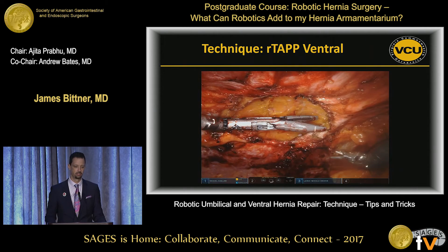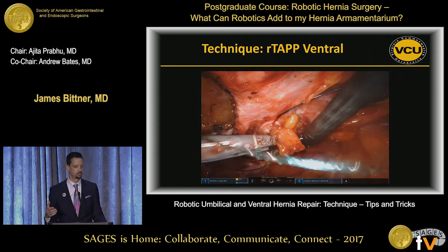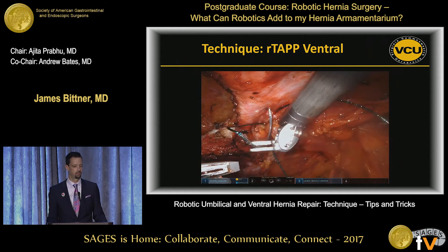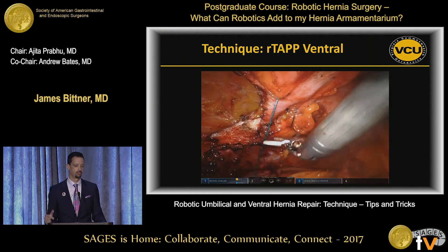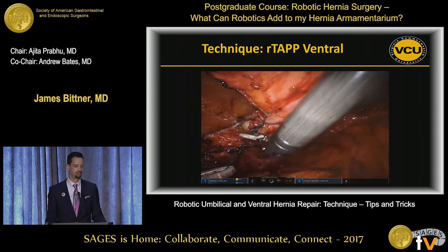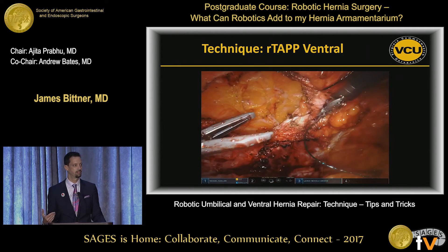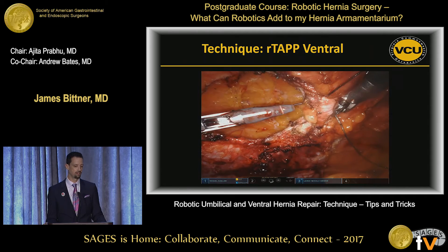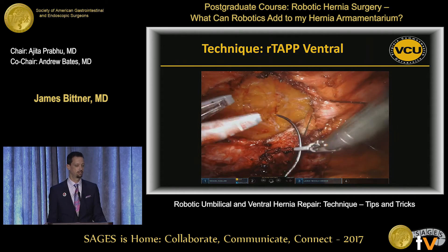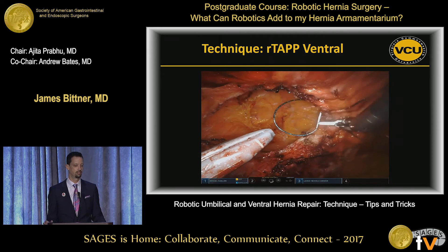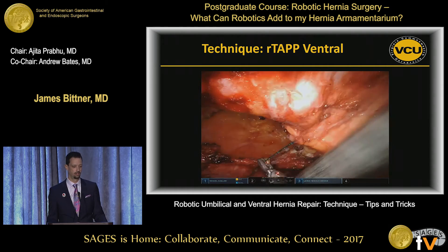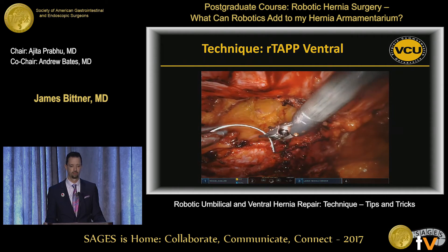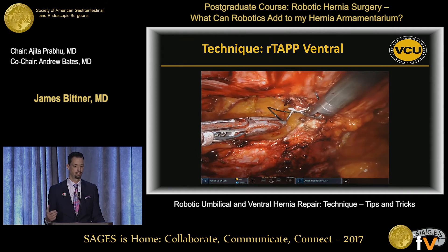There's circumferential dissection, and you can utilize instrumentation to generally measure your defect. You can use rulers, and hopefully coming soon there will be a way to measure right from the console using computer-assisted technology. Closure of the defect: key points are to ensure you're grabbing the anterior rectus sheath and not simply the posterior rectus sheath. You can excise the hernia sac or plicate it — the data are not strong either way, so it depends on your personal experience and outcomes.